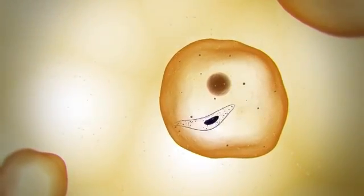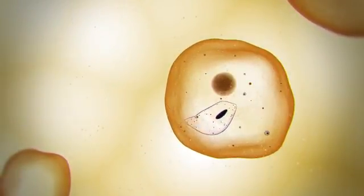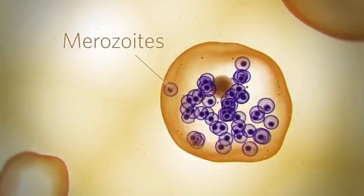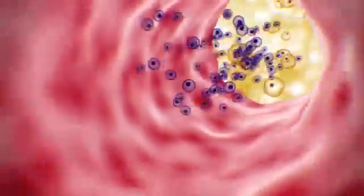The parasite develops into mature schizonts, creating tens of thousands of merozoites, which burst out of the cell and journey back toward the bloodstream.